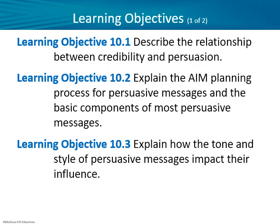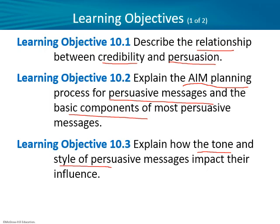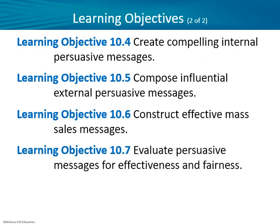Here we go with the learning objectives. We'll talk about the relationship between credibility and persuasion — or as I like to say, ethos and persuasion — basically your character, your reputation, or the reputation of your company. We'll talk about the AIM planning process: audience, information, and message — how we adapt it from routine to persuasive messages. We'll also talk about the importance of tone and style of persuasive messages and how those impact your influence, since you won't always have the same style and tone across different kinds of business documents.